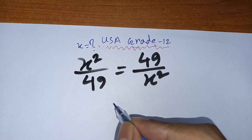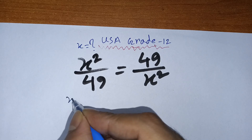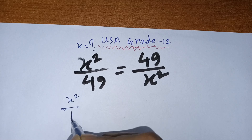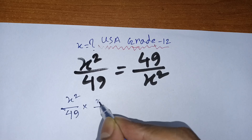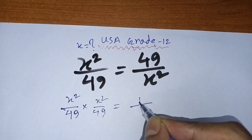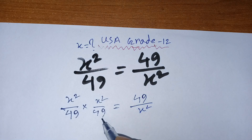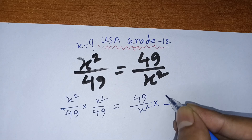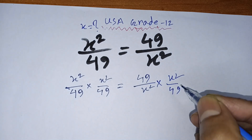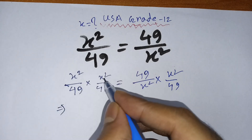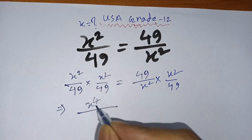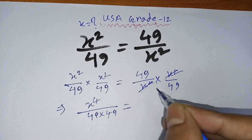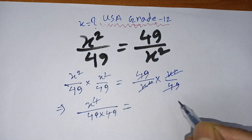I multiply both sides by x squared divided by 49, and this 49 divided by x squared, and I multiply x squared divided by 49. Then here x squared and x squared will give x to the power 4, and 49 times 49. On the right side, x squared and x squared cancel out, and 49 and 49 cancel out, leaving 1.